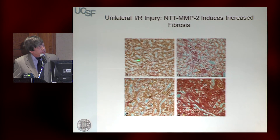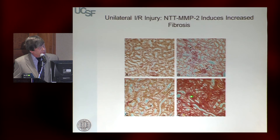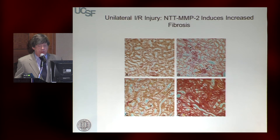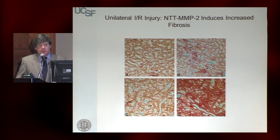Following these mice with the Picrosirius Red stain for fibrosis, since the injury was titered to be very mild in wild-type mice, there's really not much fibrosis. But looking at the transgenic mouse, it's pretty dramatic — a huge increase in fibrosis. In other words, expression of this intracellular isoform makes these kidneys exquisitely sensitive to a level of injury that has little effect on the wild type.